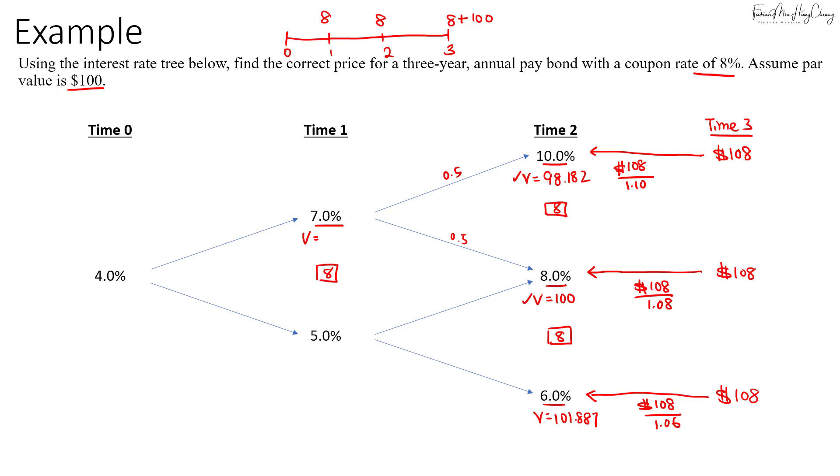I will take half of the two values, so I'll take 0.5 times 98.182 plus 100, and then I'll add in the coupon, $8. Then I will discount it at 7%, so that will give us a value of 100.085.